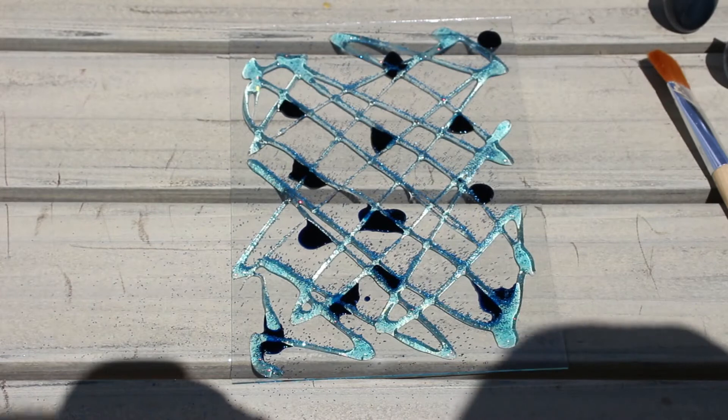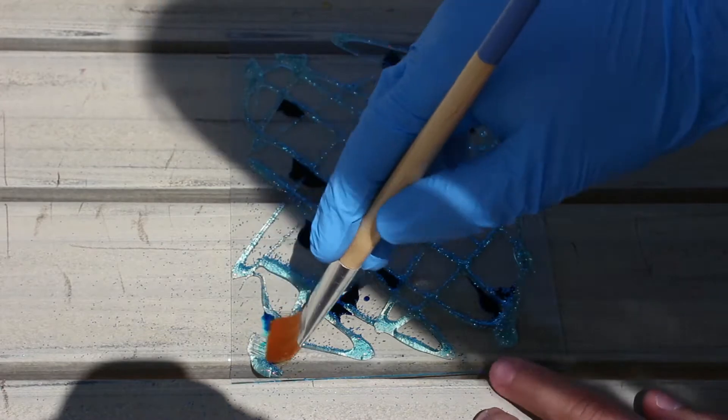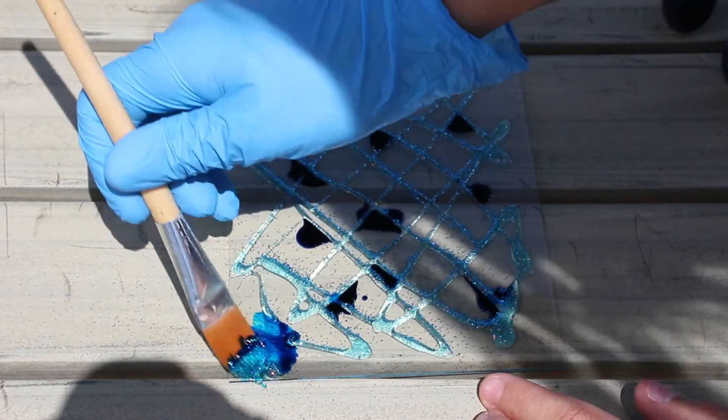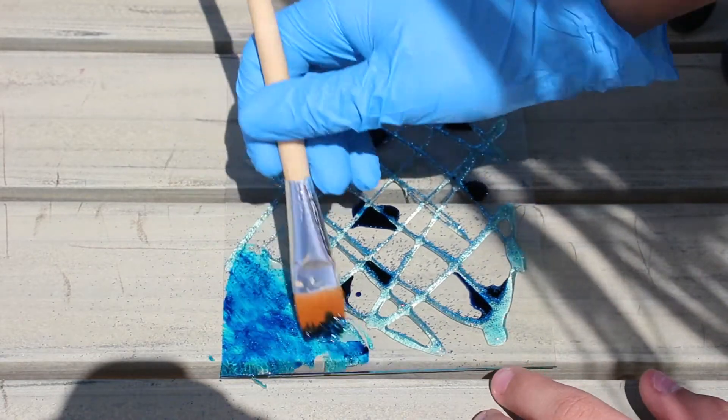Okay, so now what I'm going to be doing is I'm going to be taking my paintbrush and I'm just going to be smearing it all along the glass.